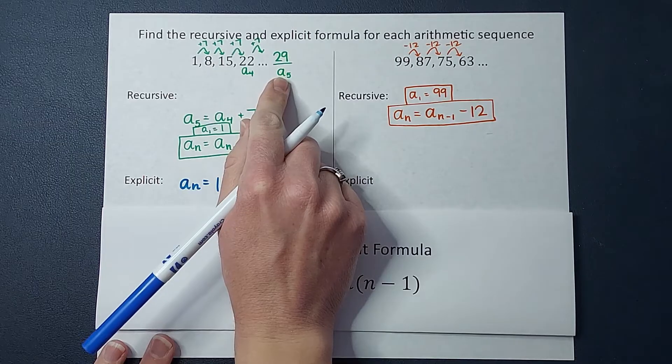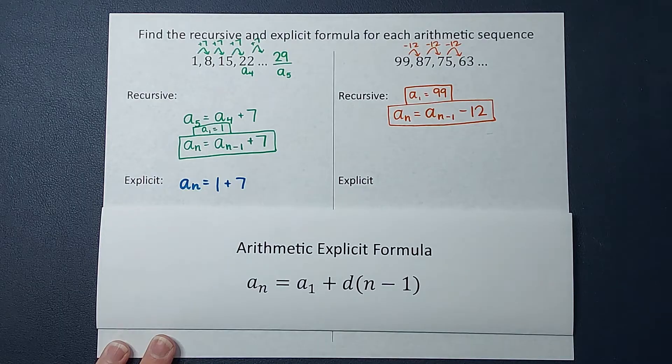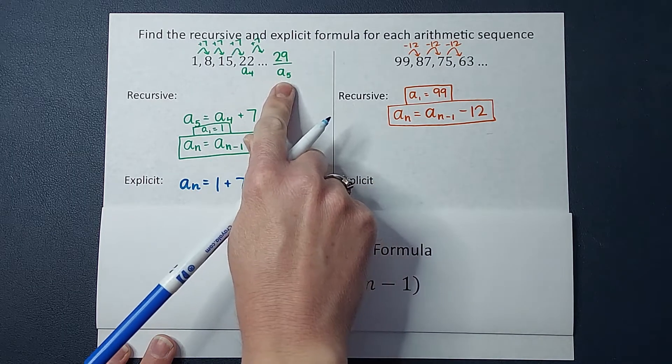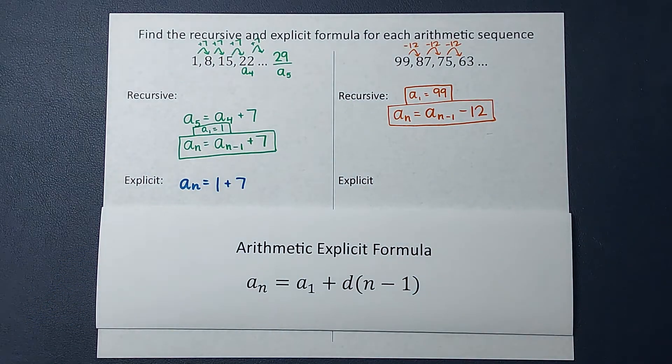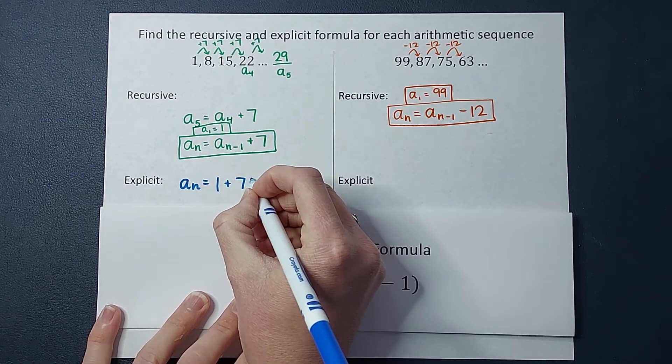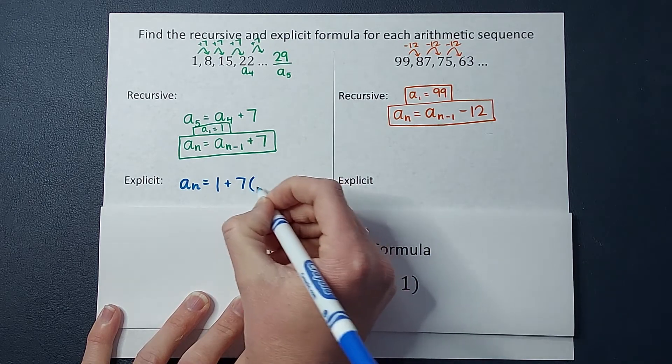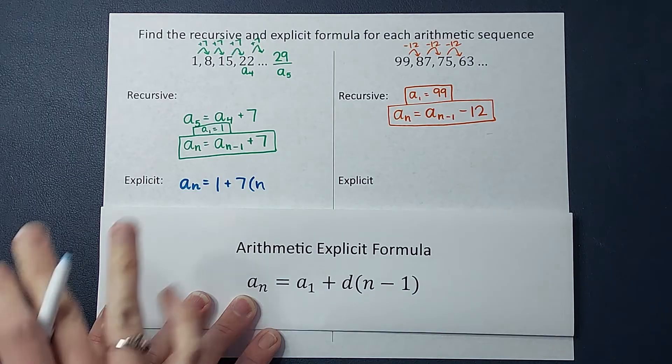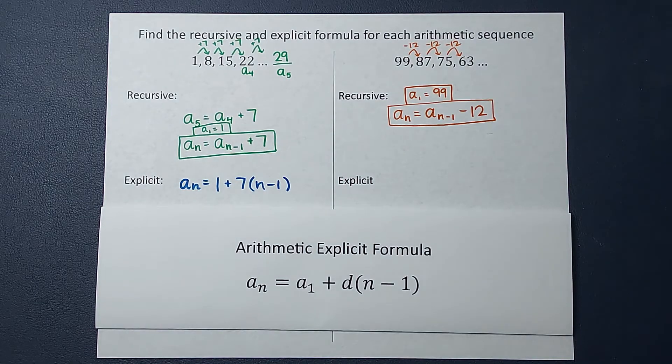You'll notice when I found the fifth term, a sub five, how many times did I add seven? To get a sub five, I added seven four times, one less time than the place I wanted. So if we're looking for the hundredth term in this sequence, we would add seven 99 times. Does that make sense? That is where the n minus one comes in. So you're going to add seven, how many times? Well, you're going to add it, whatever number you want to find, whatever place, one less time than that. That is my explicit formula.